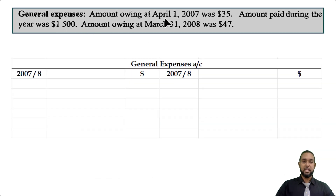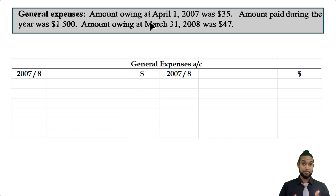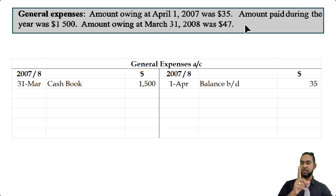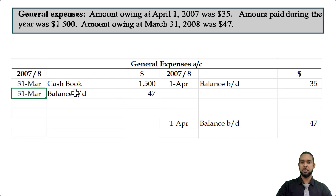Let's get into the general expenses account. Amount owing April 1st 2007 was $35. 'Amount owing' means the expense has been accrued. An accrued balance at start for an expense is classified as a current liability, as is an accrued balance at end. So an accrued expense is a current liability — the balance will therefore be brought down on the credit side. The amount paid during the year was $1,500, so when you pay an expense you credit the cash book and debit the expense account. Amount owing at March 31st 2008 was $47, so it's still accrued at the end — brought down on the credit side, but first carried down on the debit side.